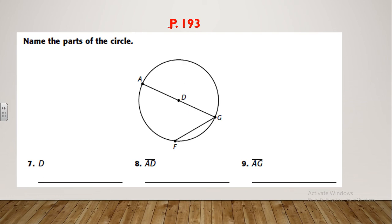Now I want you to open your booklet to page 193. Let's answer some questions together. The shape is given and you are asked to name the parts of a circle. The first one — point D — that point is called what? Great job, I can hear you — that is the center. The second question asks about line AD, which goes from a point on the circle to the center, so that will be the radius. Great job.